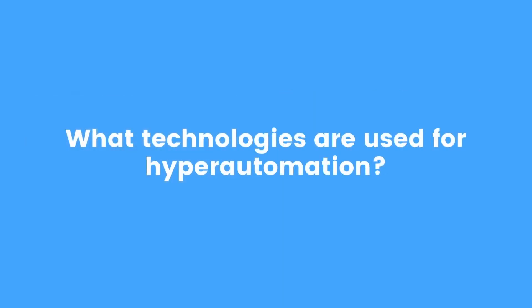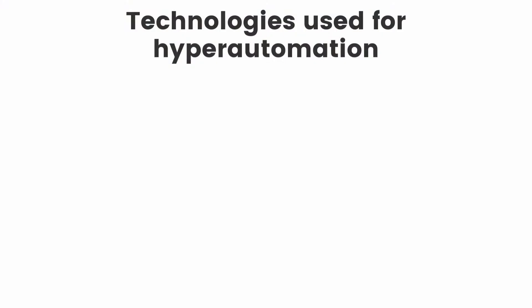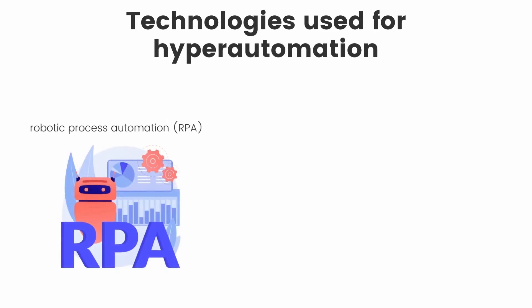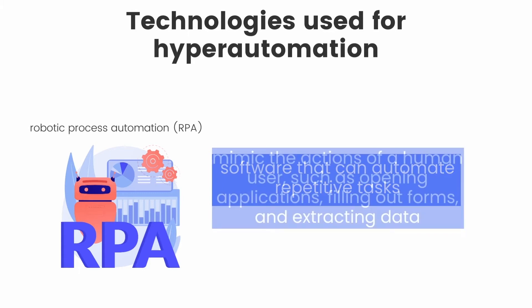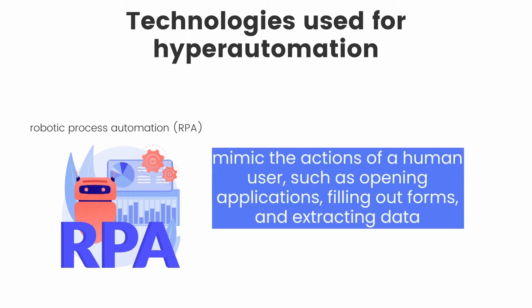But what technologies are used for hyper-automation? Technologies used for hyper-automation include Robotic Process Automation, or RPA, which is software that can automate repetitive tasks and mimic the actions of a human user, such as opening apps, filling out forms, and extracting data.